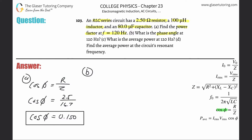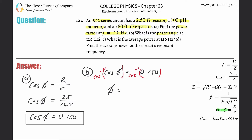Part (b): find the phase angle at 120 Hz. Since cosine of the phase angle equals 0.150, we take the inverse cosine of both sides. Make sure your calculator is in degree mode — go to mode and confirm that — then do second cosine of that value. The phase angle works out to about 81.4 degrees.